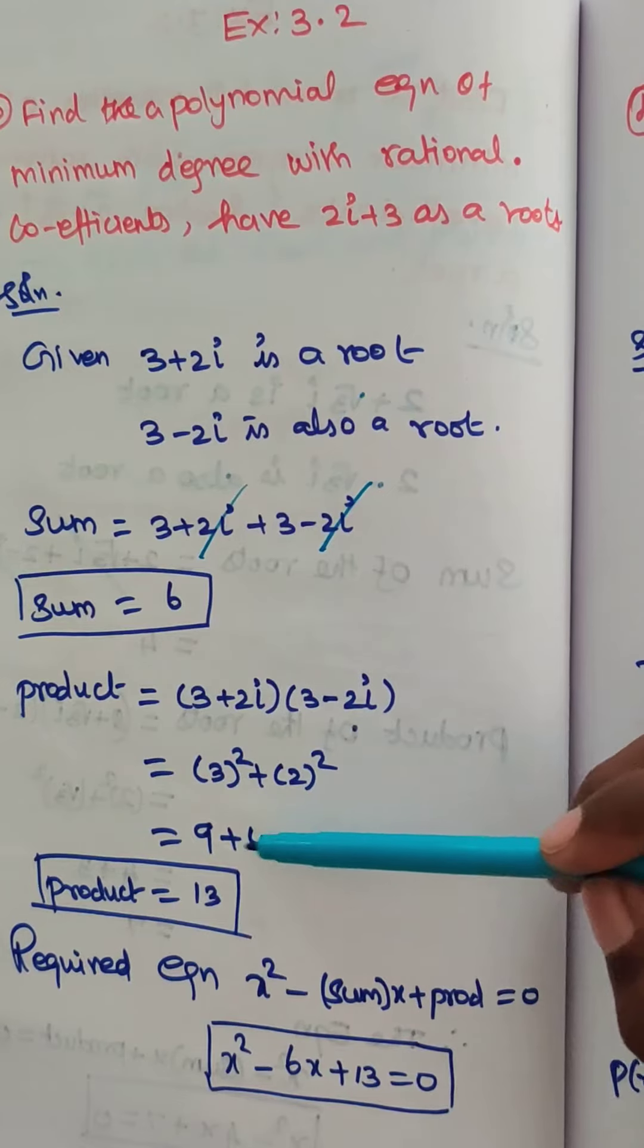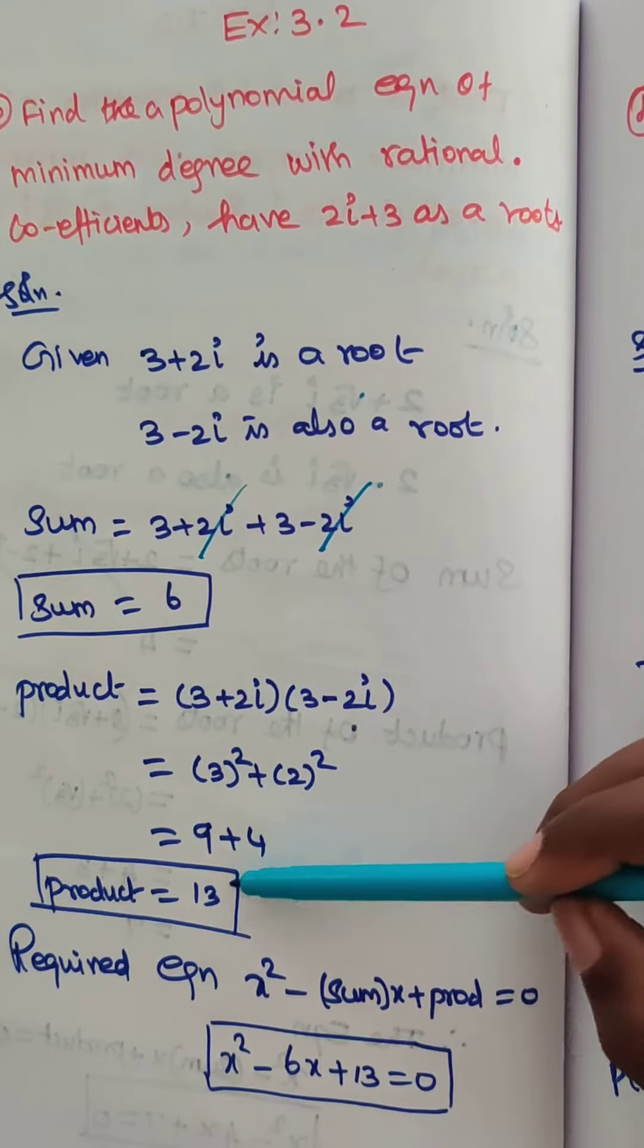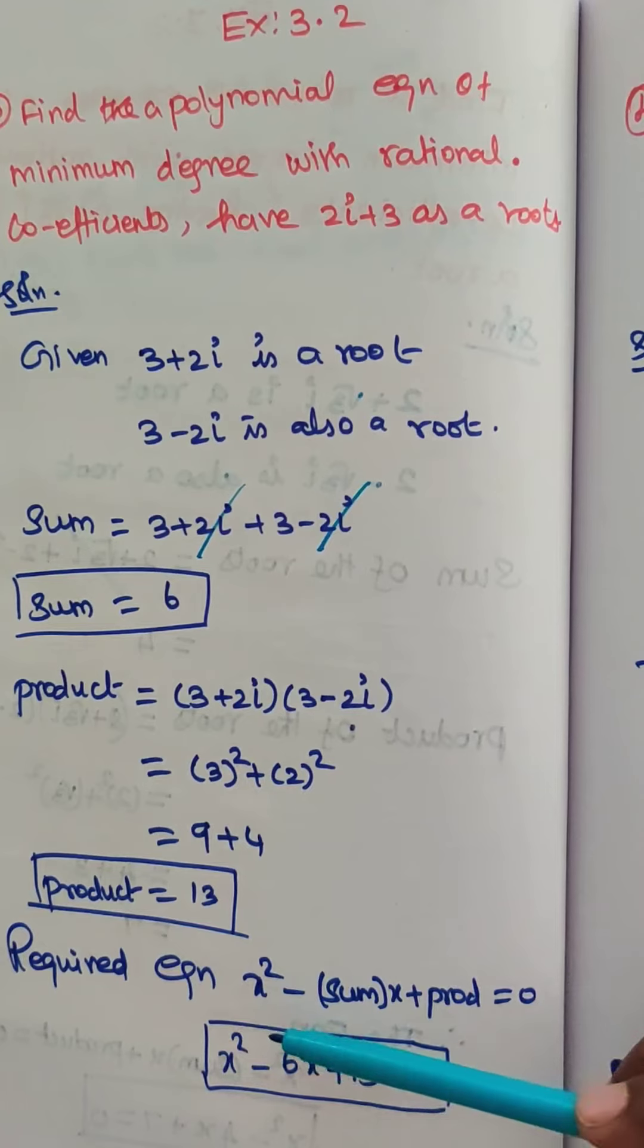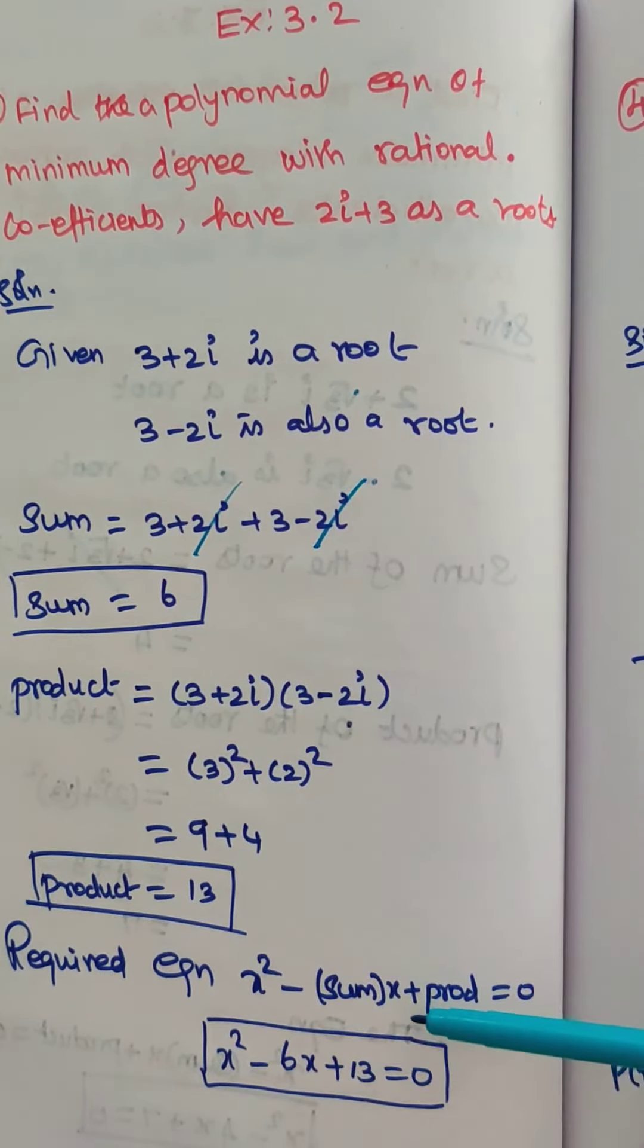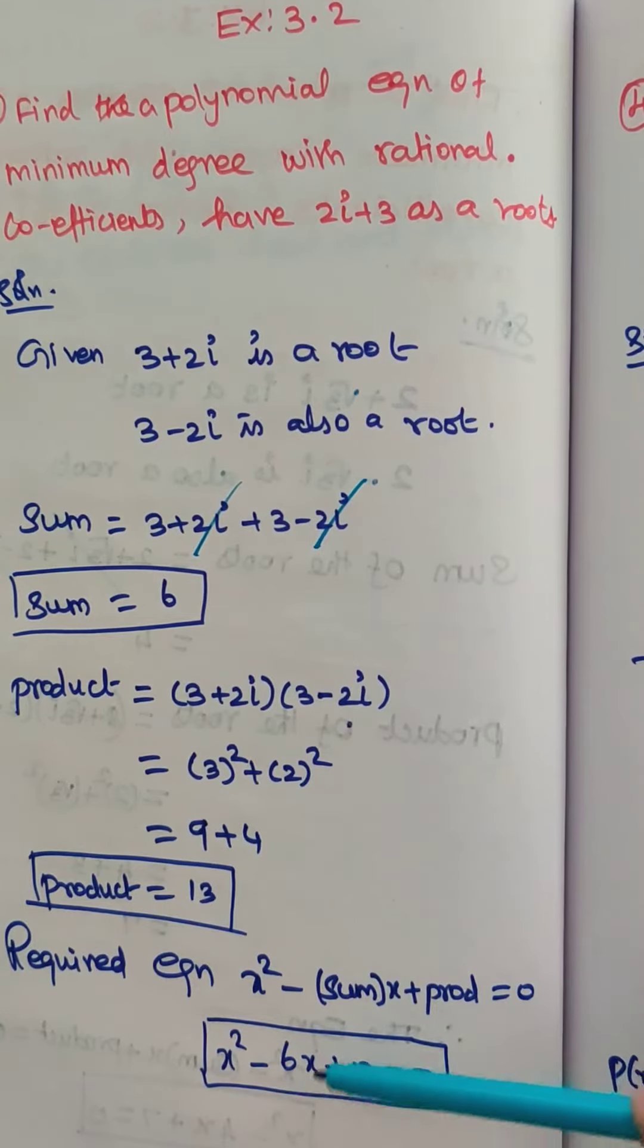So the required equation is x square minus sum into x plus product equals 0. Now x square minus sum 6x plus product 13 equals 0.